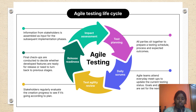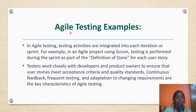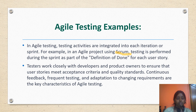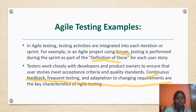Moving to agile testing examples: in agile testing, testing activities are integrated into each iteration or sprint. For example, in an agile project using Scrum, testing is performed during the sprint as part of the definition of done for each user story. Testers work closely with developers and product owners to ensure that user stories meet acceptance criteria and quality standards. Continuous feedback, frequent testing and adaptation to changing requirements are key characteristics of agile testing.